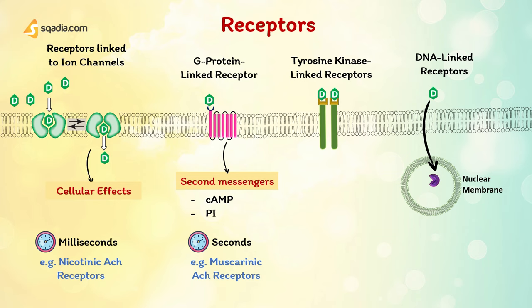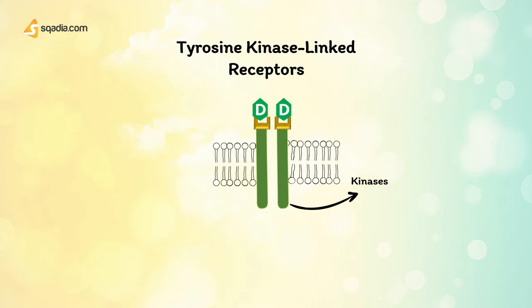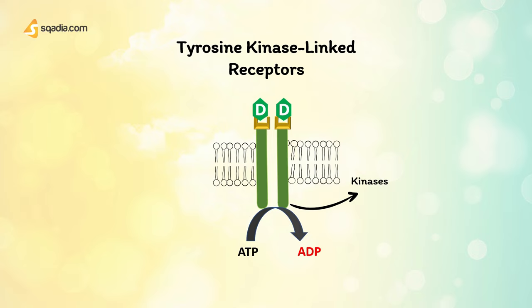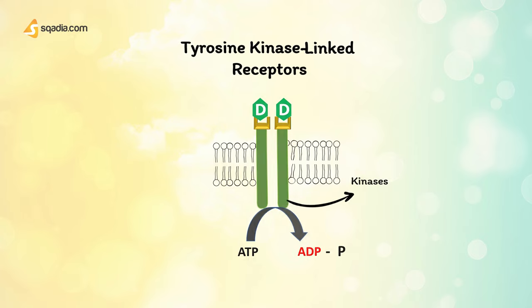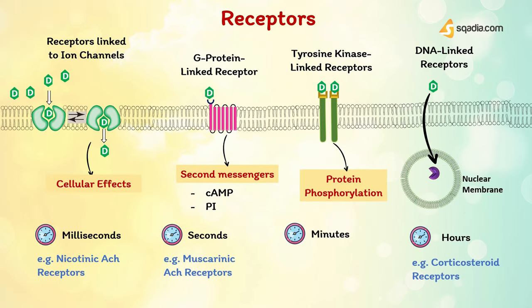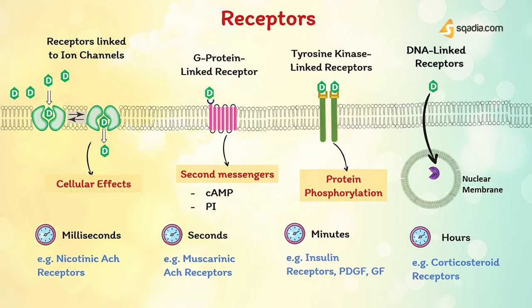We also have tyrosine-kinase-linked receptors, also called enzyme-linked drug receptors. They are transmembrane proteins unique because besides working as chemical messengers, they also work as enzymes. These receptors mostly work in pairs. A kinase is a general term for something that can transfer phosphorus molecules, usually from ATP. Tyrosine-kinase-linked receptors are involved in the regulation of growth and differentiation and responses to metabolic signals. The response time of enzyme-initiated transduction is slow, in the range of minutes. Examples include the receptors for insulin, platelet-derived growth factor, and epidermal growth factor.